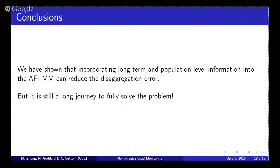Right, the conclusions. We're showing that incorporating long-term and population-level information into the FHMM can reduce disaggregation error. Why? Because we used more information in the model. But I think it's still a long journey to fully solve this problem. Thank you.